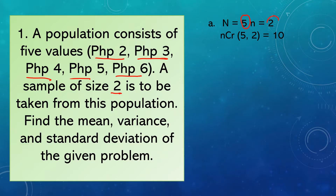That's the reason why n equals two. By applying the combination method, we have N C R = 5C2. Therefore, we get ten. So we need to have a total number of samples equal to ten.